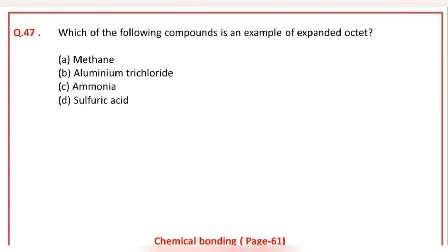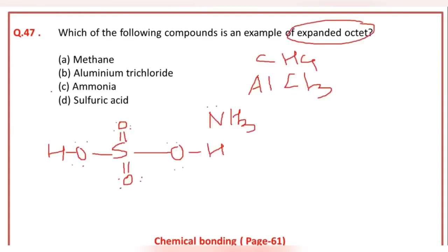Which of the following compounds is an example of an expanded octet? D is the answer — sulfuric acid is an example of an expanded octet.